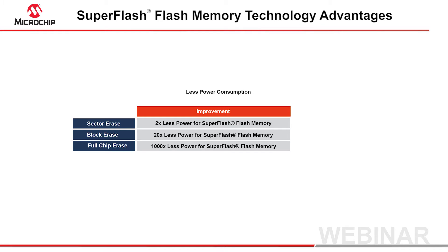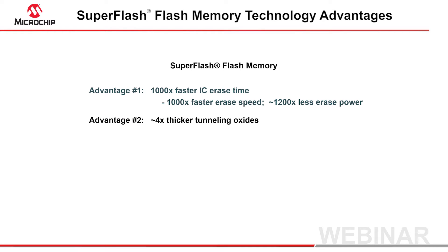Super Flash advantage number two is thicker oxides, while achieving the same erase and programming times and performance. For IC designers who have watched Moore's Law in action over the last few decades, with processes getting ever smaller, we can attest that the larger geometries of years past were harder to break. Common sense says that thicker oxides improve long-term reliability, and in non-volatile memories one obvious result is that thicker oxides means more program and erase cycles before the oxide ruptures or otherwise wears out.